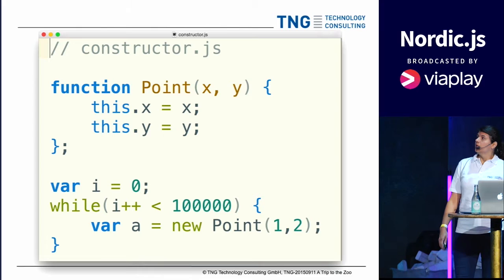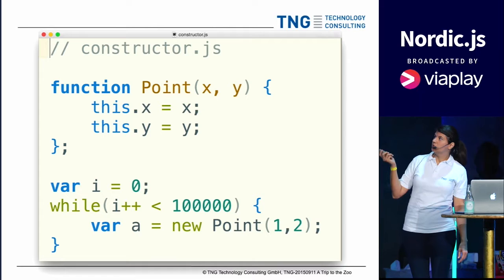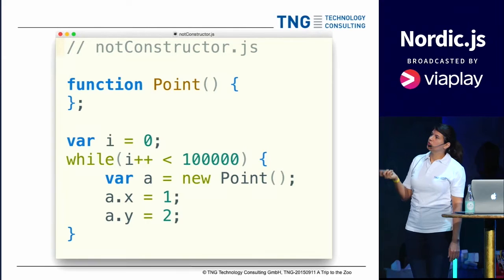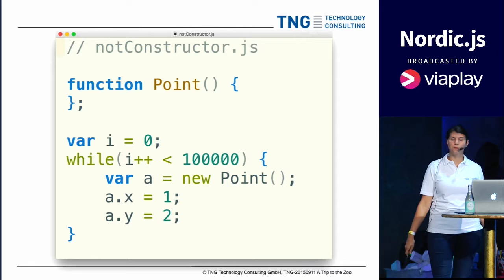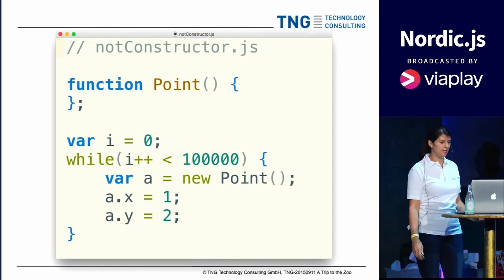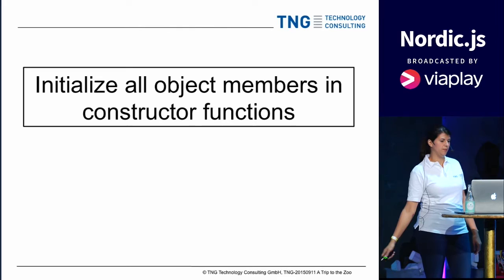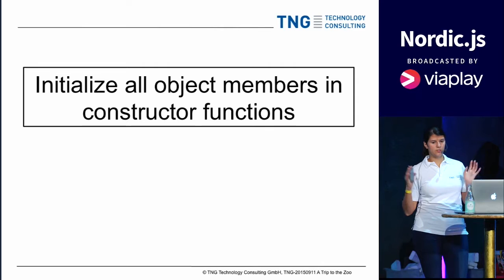When you want to instantiate objects, you can do everything in the constructor function, or you can create an object and set its properties dynamically. But because it's important for the compiler to know when two things have the same hidden class, it's recommended that you always initialize object members in the constructor function. This helps ensure that objects of the same type actually have the same hidden class.